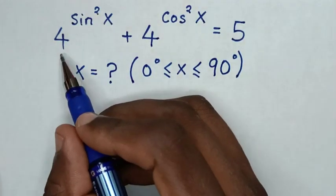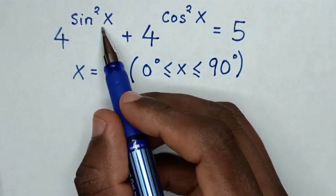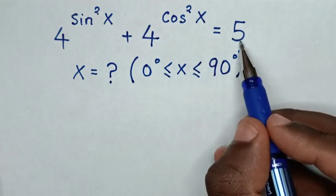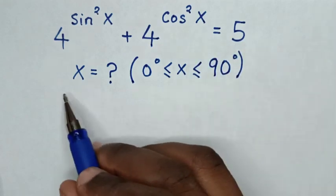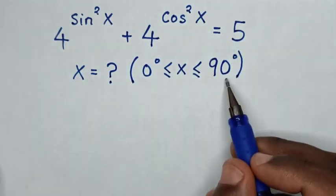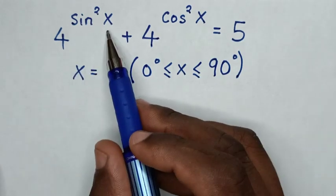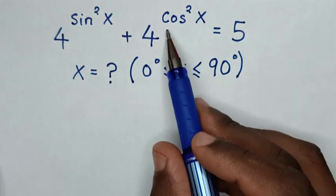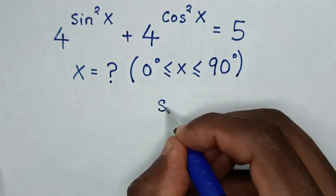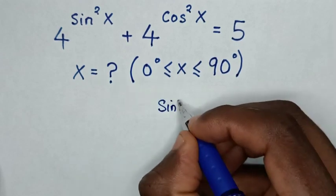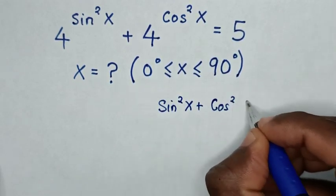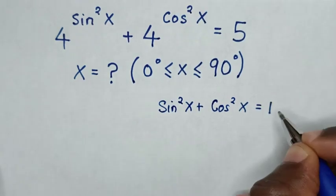Hello! How to solve 4 power of sine square x plus 4 power of cos square x is equal to 5, to find the values of x such that x is from 0 to 90 degrees. From the powers of sine square x and cos square x, we apply the rule: sine square x plus cos square x is equal to 1.